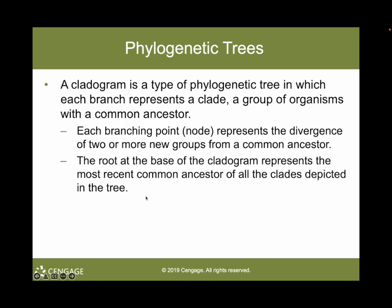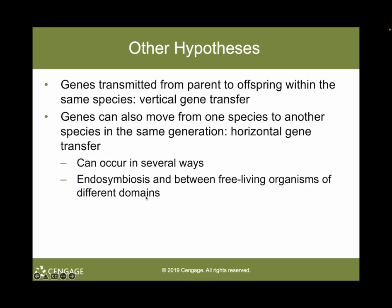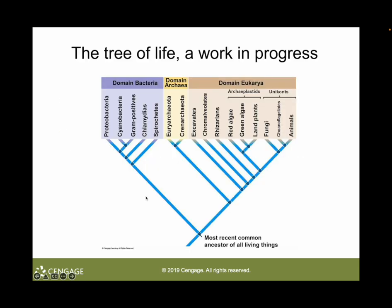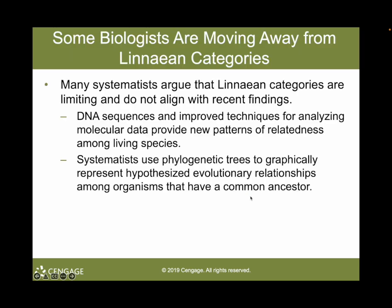Cladograms are rooted by the most recent common ancestor, if the most recent common ancestor is known. The root or node at the base of the cladogram represents the most recent common ancestor of all clades — here at the very bottom. This tree is rooted with the most recent common ancestor of all living things, and from there we have nodes forming clades for each domain, including a node here representing all eukaryotes as a clade.